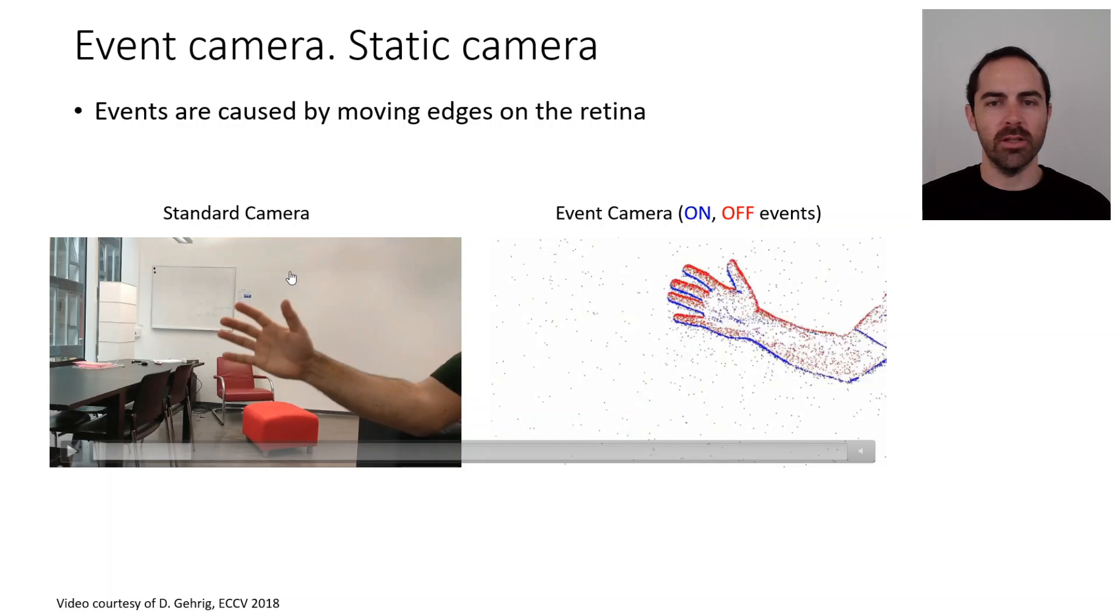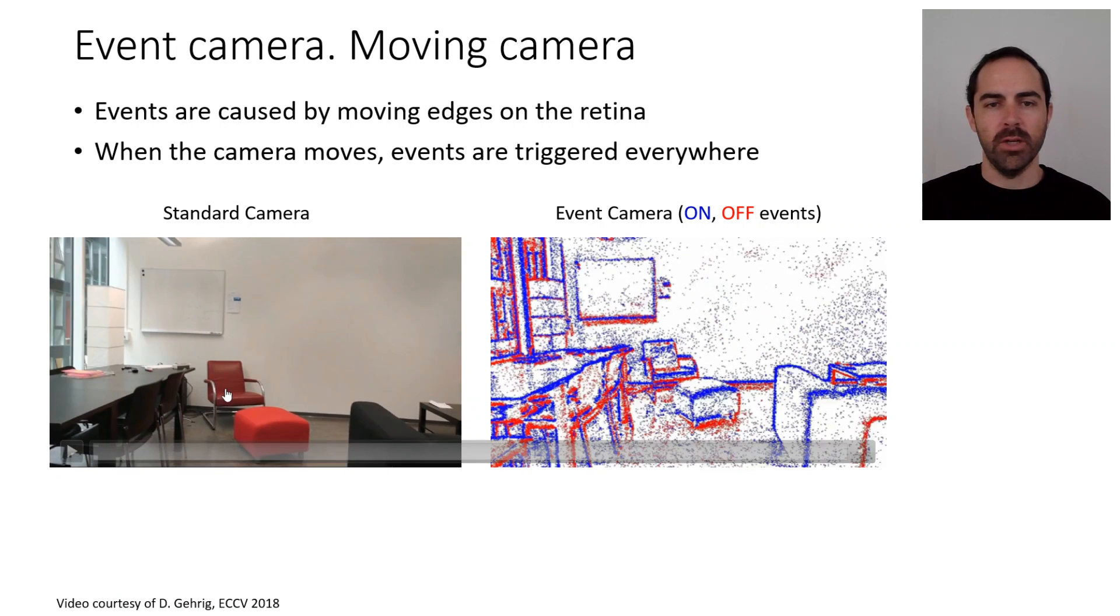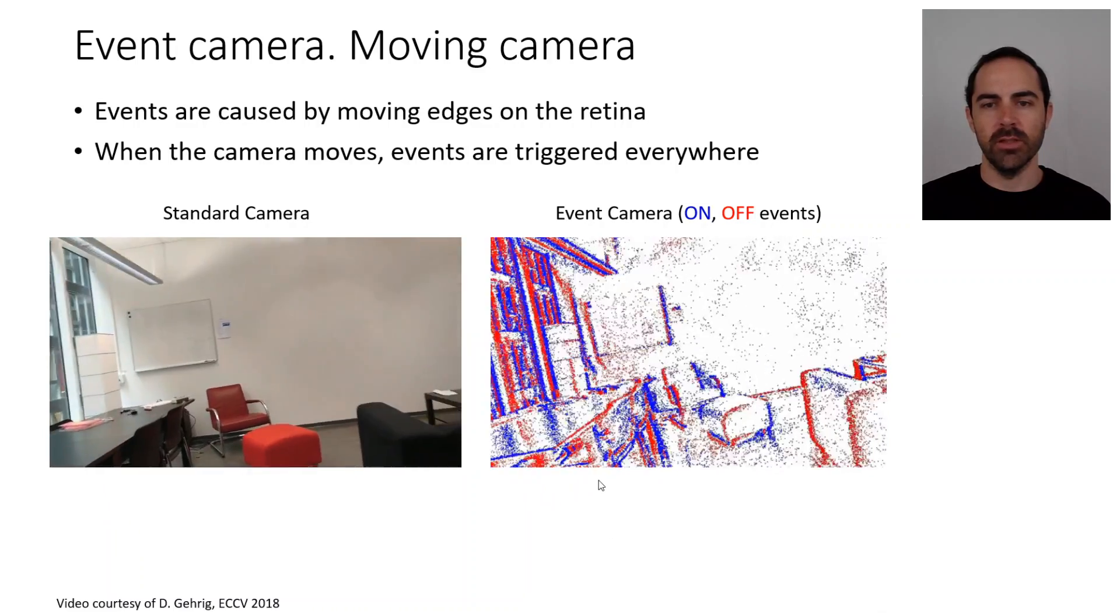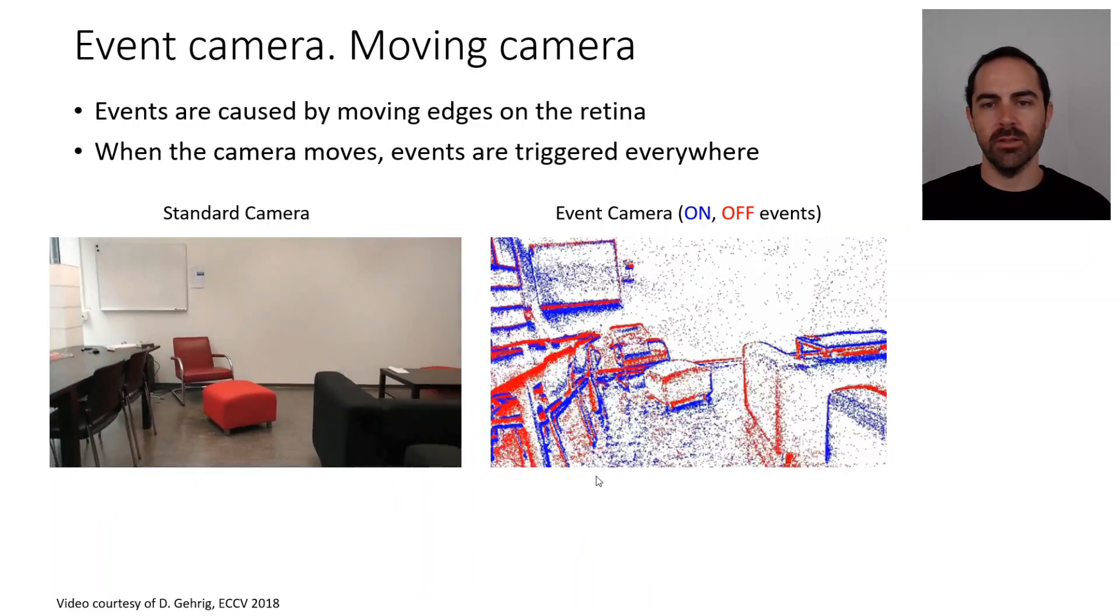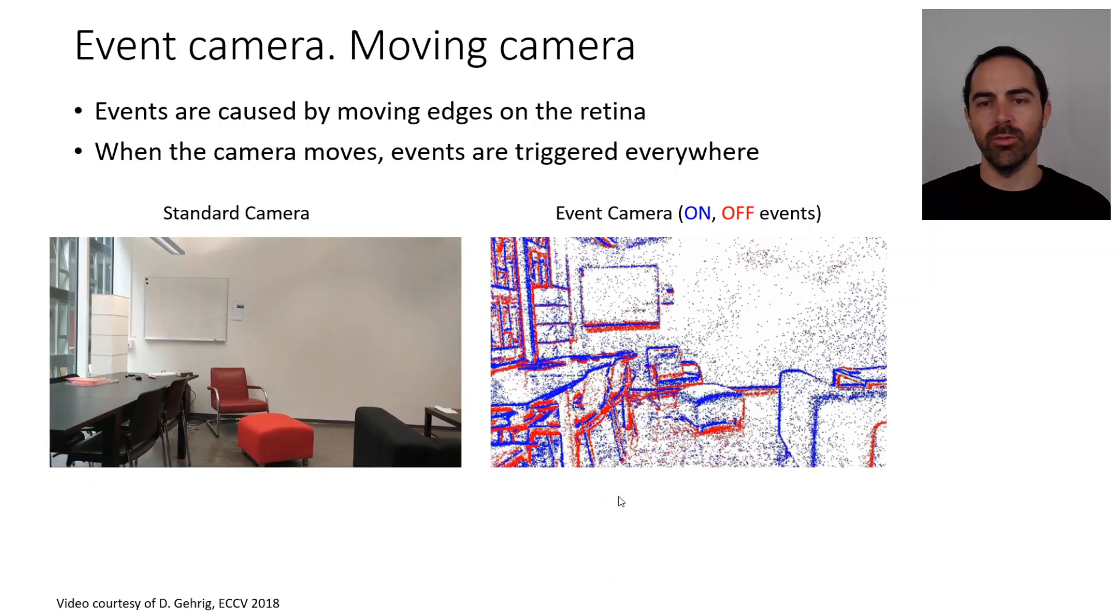This is the case of a static camera. We don't see the objects that are in the standard camera because they are not moving, these are not moving edges. However, if we now move the camera around, then events are caused by moving edges and we will see that events, these red and blue dots, are triggered everywhere on the image plane.